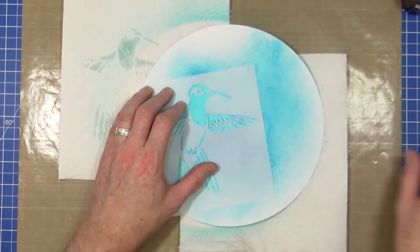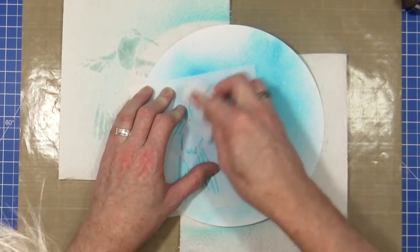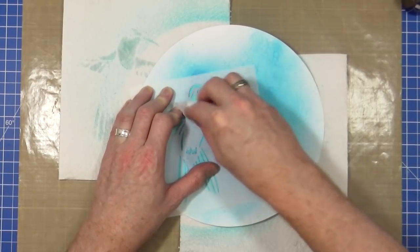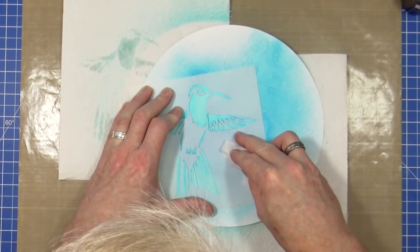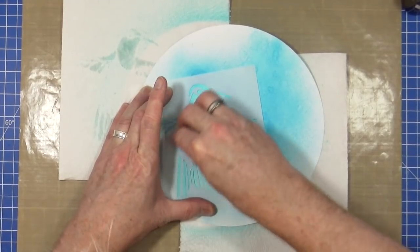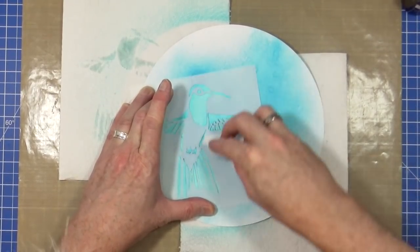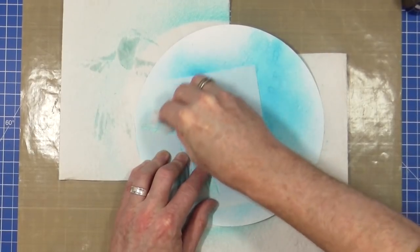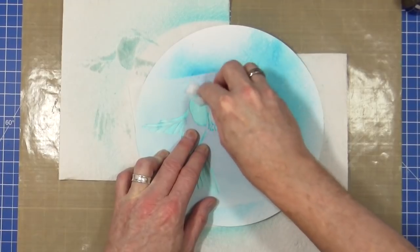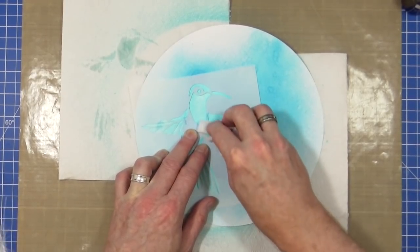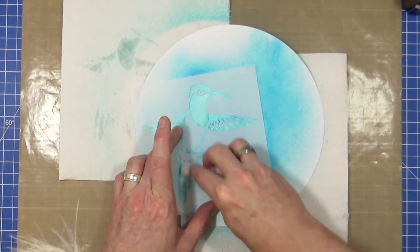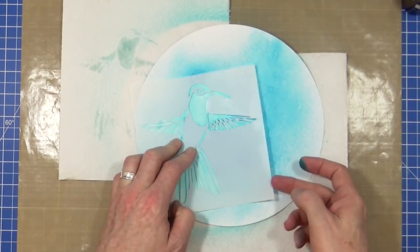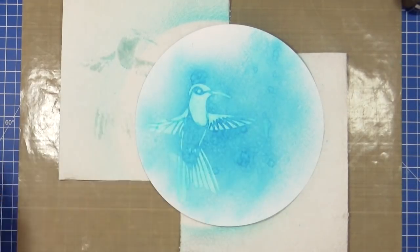And go in for a second time if you feel that you want to remove a bit more colour. Try and keep it in the same position as last time. That's it. There, that is much better, a bit more pronounced. So let's get that dried off.